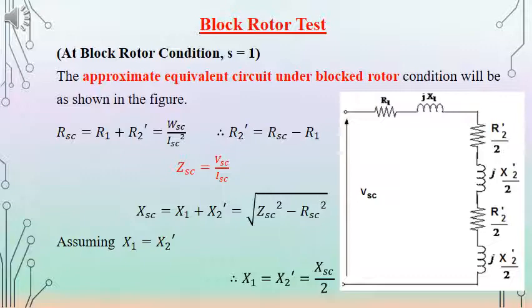By finding Rsc and separately measuring stator winding resistance R1 by the voltage-current method, we get R2' = Rsc - R1. We also find Zsc = Vsc / Isc, then Xsc = sqrt(Zsc^2 - Rsc^2). Since Xsc = X1 + X2', assuming X1 = X2', we get X1 = X2' = Xsc / 2.